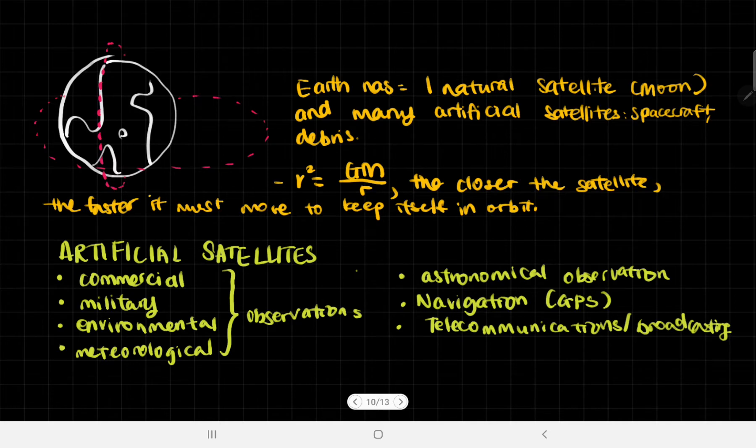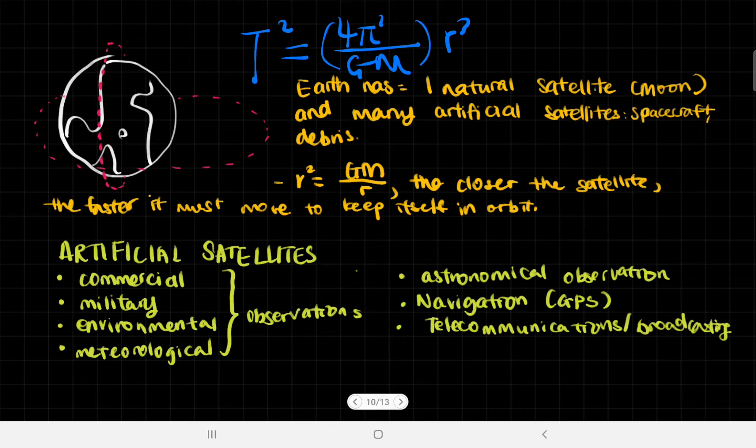Now that we have this equation, we can talk about the orbits around Earth. Earth has one natural satellite, the Moon, which has been orbiting without human intervention. However, we have many artificial satellites. Since v² = GM/r, the closer the satellite is to Earth, the faster it must move to keep itself in orbit.